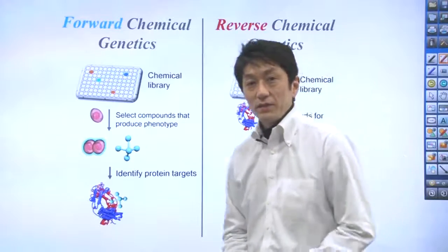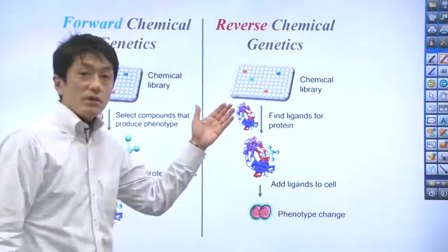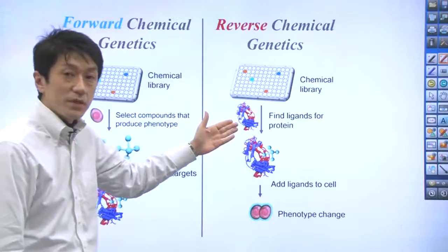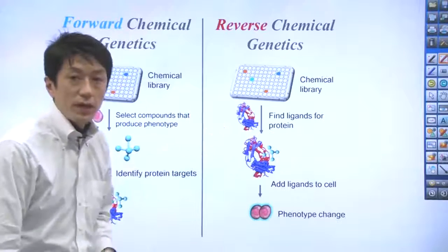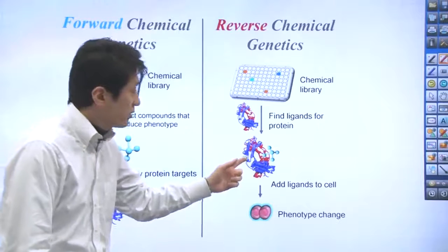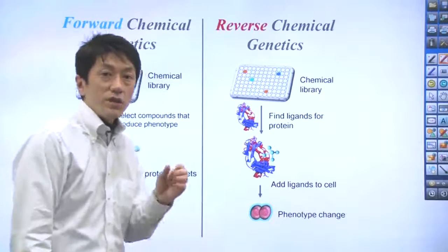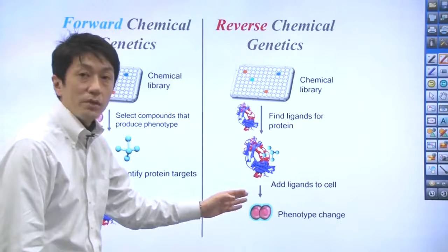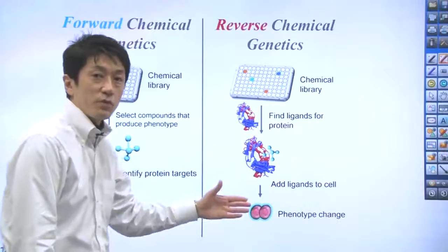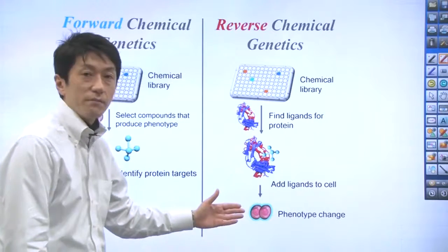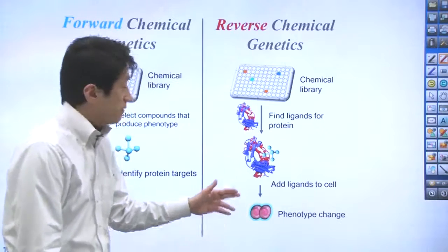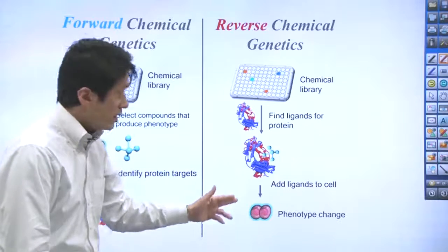On the other hand, reverse chemical genetics starts with screening a chemical library with a specific protein. You find a chemical ligand for this protein of interest. You use the ligand to determine the phenotypic consequences of altering the function of this protein in a cellular context. If you observe a problem in cell division, the protein plays a role in cell division.